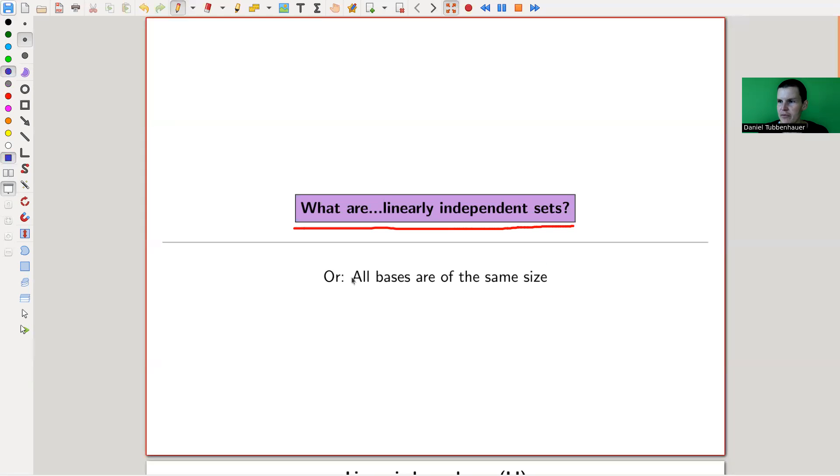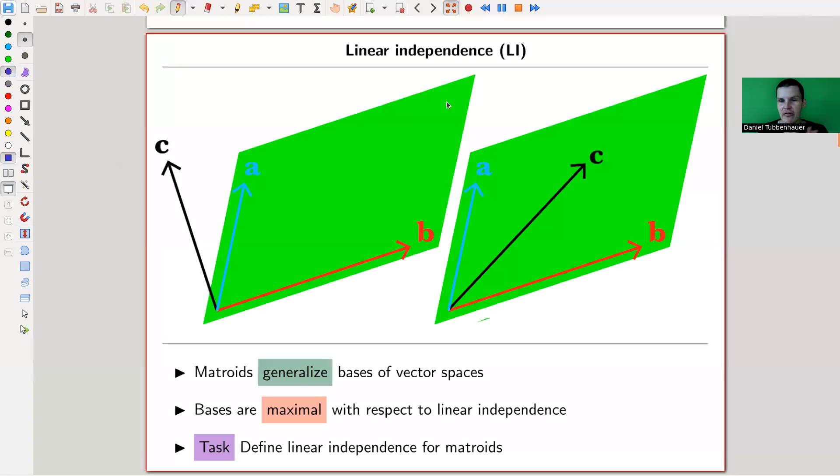But anyway, there are some beautiful things you can say, for example, all bases are of the same size. It's kind of remarkable, the maximal linear independent sets. So let's just get started, and let us remind ourselves what a matroid is, but now in a slightly different language. What I'm going to show you now is equivalent to what I showed you in the previous video, and it's a bit a matter of taste which one you prefer. Sometimes this one is nicer, sometimes the other one is nicer, but I would like to have both mentioned.